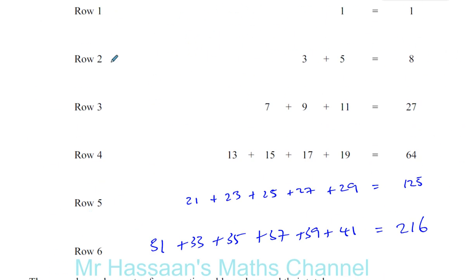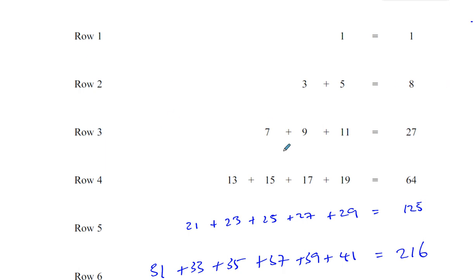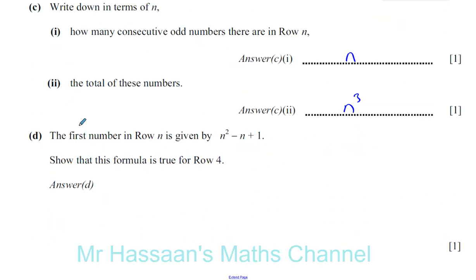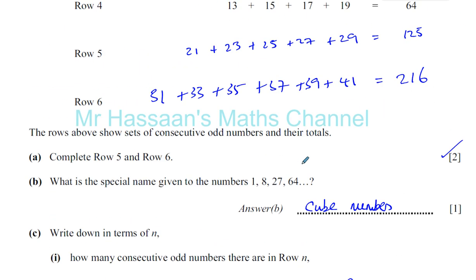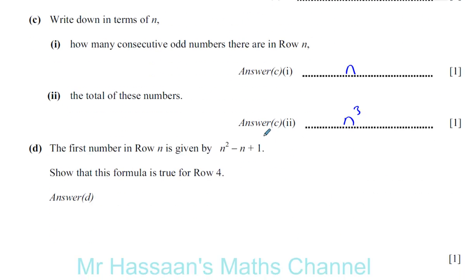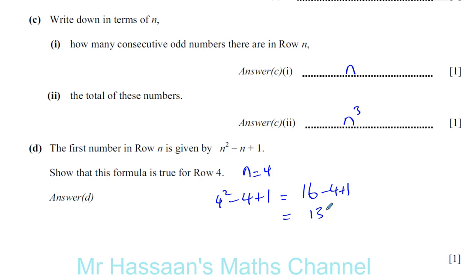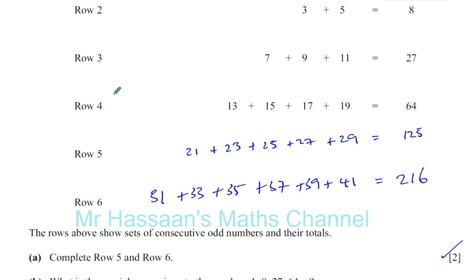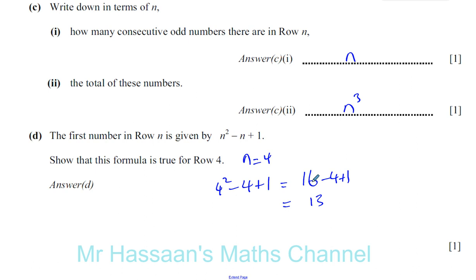The first row total was 1 cubed, the second row was 2 cubed, the third row was 3 cubed, so the nth row is n cubed. The first number in row n is given by n squared minus n plus 1. Show that this formula is true for row 4. When n equals 4: 4 squared minus 4 plus 1 equals 16 minus 4 plus 1 equals 12 plus 1, which is 13. The first number in row 4 is indeed 13, so the formula works.